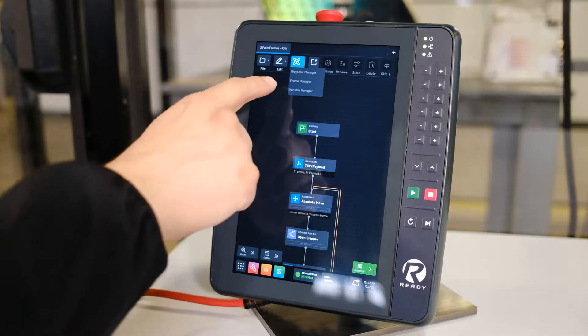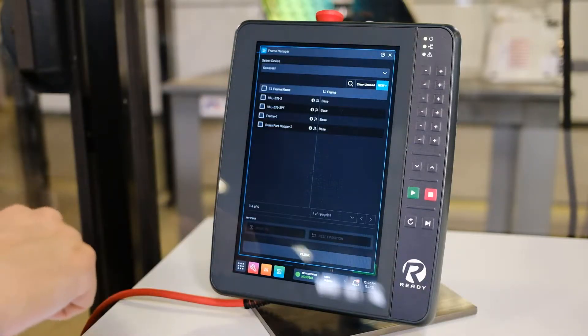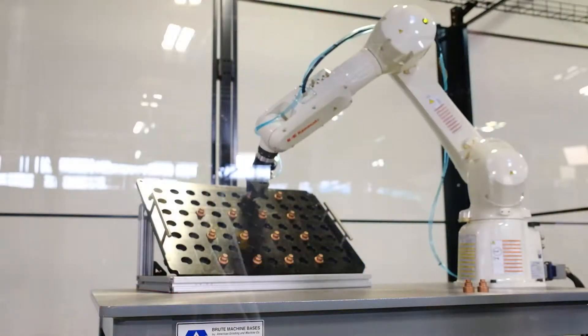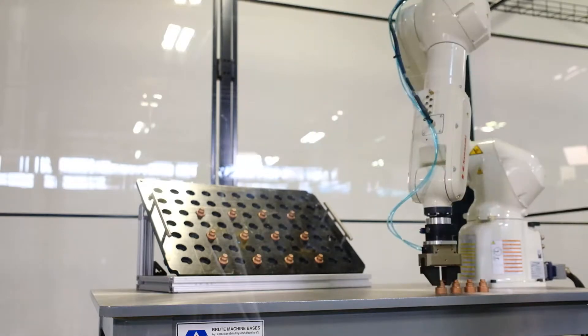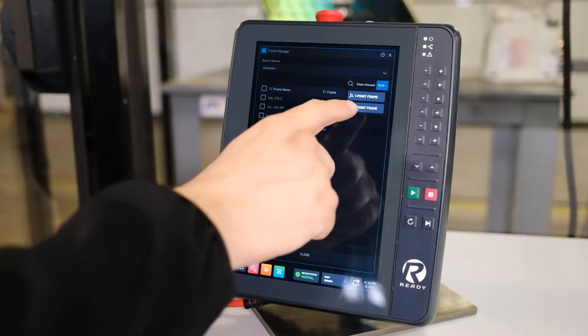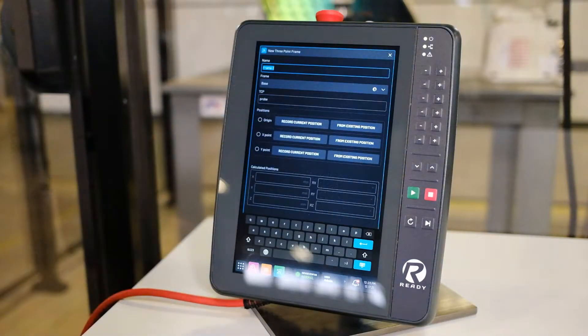If we come into the Frame Manager, we'll see the frames that we've currently created, including one that we're using for this demonstration, using our brass parts. Creating a three-point frame is done simply by selecting the three-point frame in the new menu.